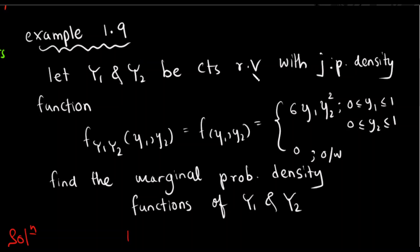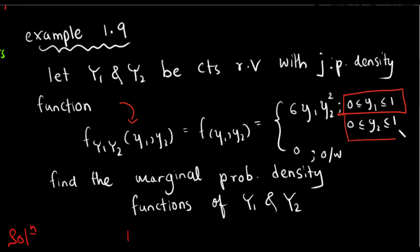Now we will use continuous random variables. We will use the joint probability density function: 6y1·y2². The values and ranges are y1 to 2y2 and y2 to 2y2. We need to find the marginal probability density functions of y1 and y2, and determine whether y1 and y2 are independent.